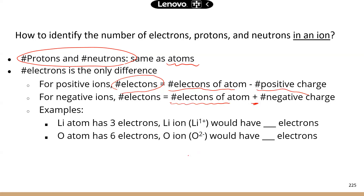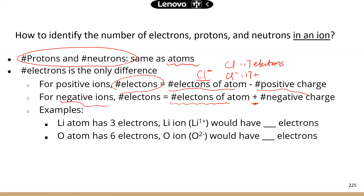Let's do a quick example with chlorine. Chlorine with a negative charge is the chloride ion. We know the chlorine atom has 17 electrons. So how many electrons does chloride carry? This is a negative ion, so the number of electrons is whatever is in the original atom — 17 — plus the number of negative charge, which is 1. So 17 plus 1 equals 18.